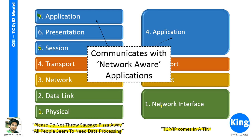Next, we learn about the network layer. When the network layer gets a segment from the transport layer, it adds a network layer header, and that information is called a packet. One of the critical functions of the network layer is IP addressing, also known as logical addressing. We will learn about IP addressing in the next video, day 3. The network layer also finds the best path — it compares IP addresses and checks if the destination IP is in the local subnet; if not, it finds the best path to the destination.